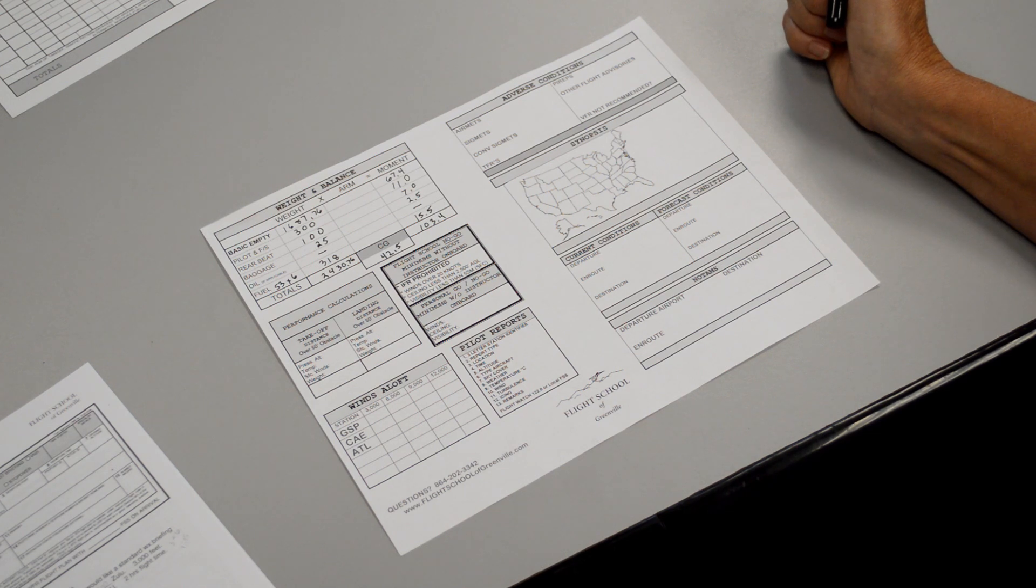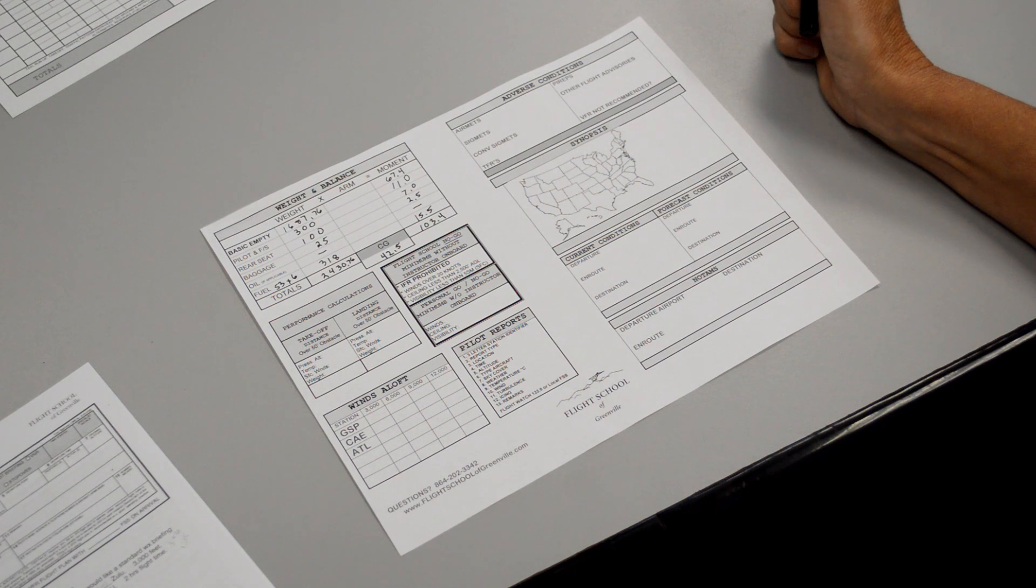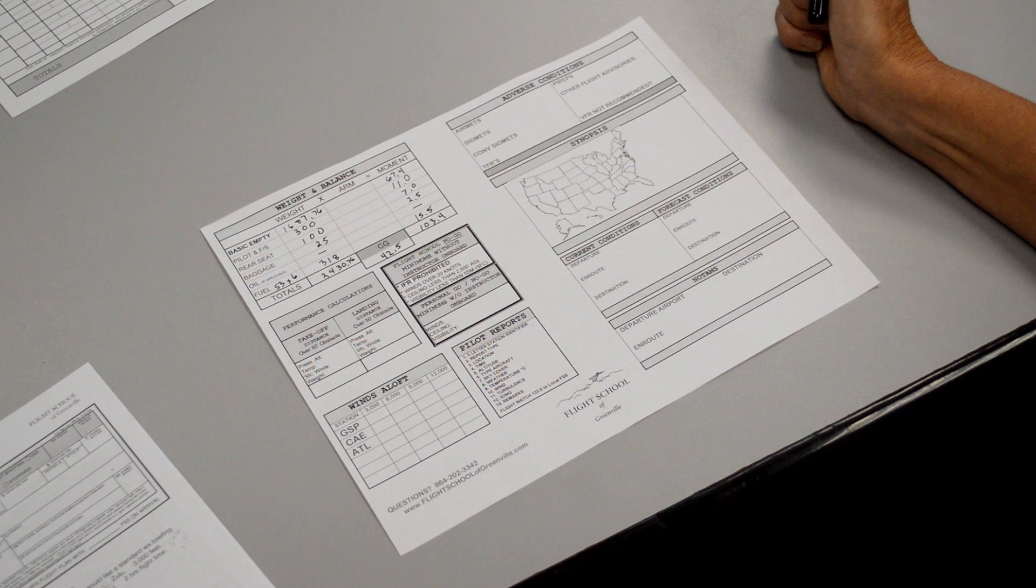It's a Cessna 172. We'll be departing Golf Mike Uniform at 1800 Zulu. If you would give me the winds at both 3 and 6,000 feet, please. We'll be departing Golf Mike Uniform and flying direct to Charlie Alpha Echo. That's Columbia, South Carolina. We expect about an hour and 15 minutes en route.